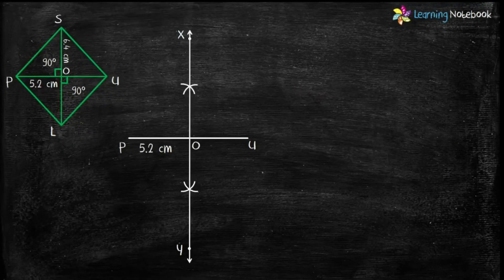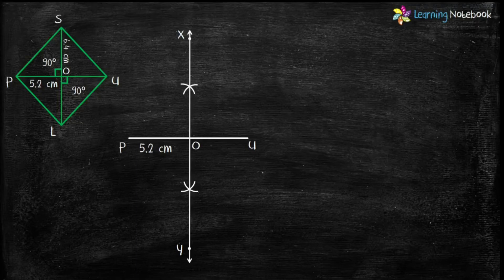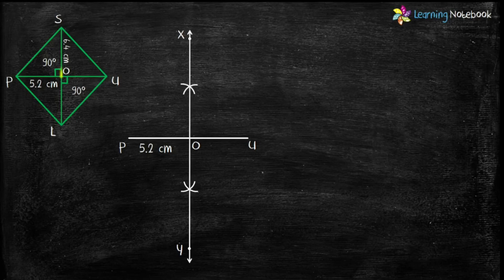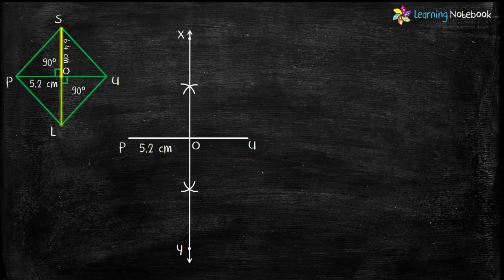Now students, look at the rough sketch. The length of second diagonal SL is 6.4 cm and PU is the perpendicular bisector of SL. Therefore, both SO and OL will be 3.2 cm in length.